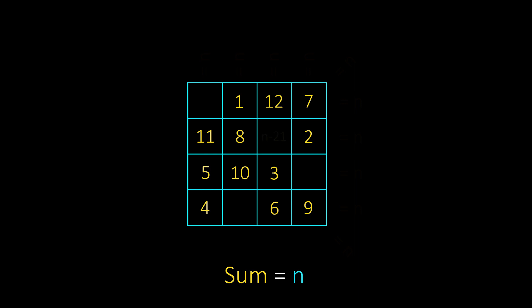And now we write n minus 21, n minus 20, n minus 19, and n minus 18.